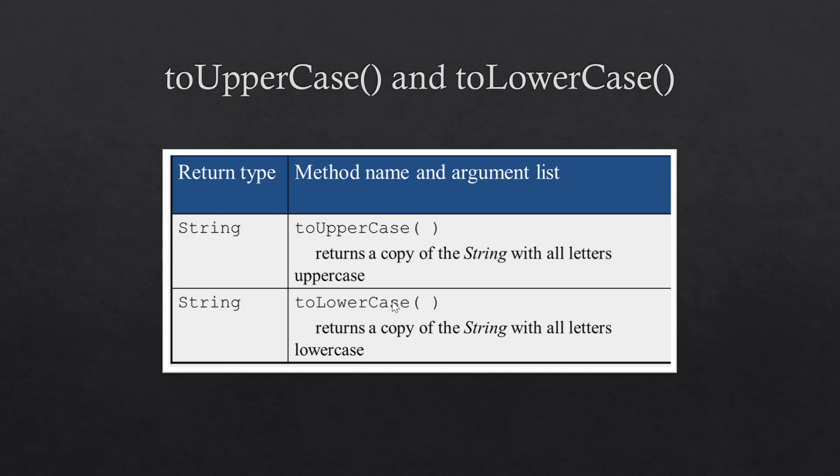Remember, these two methods do not modify the data stored in the original string — they return a copy of that string converted to either all uppercase or all lowercase. The string value you get back should be stored in another string object or printed out. If you want to change the original object you can store the result back in the same object reference.